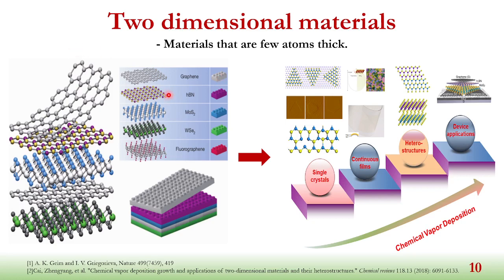We have hexagonal boron nitride nanomaterial, fluorographene, tungsten diselenide, and so on. These are very nice nanomaterials because they have direct applications on nano-electronic devices, on gas sensing, and so on.